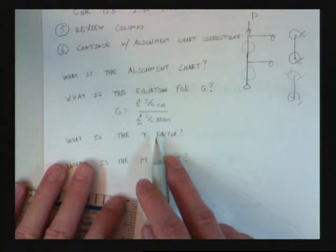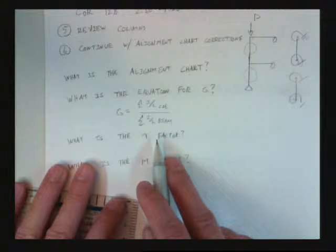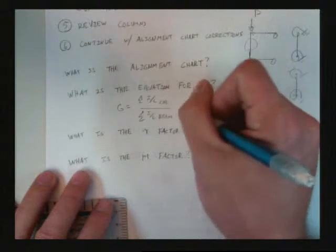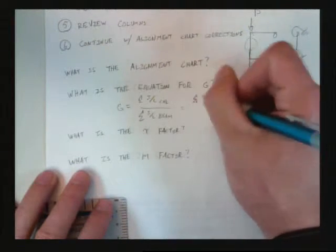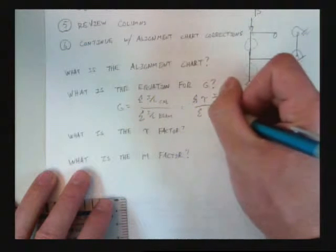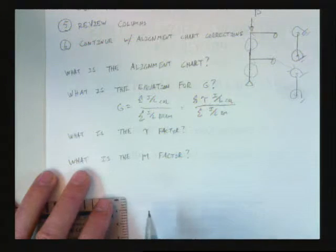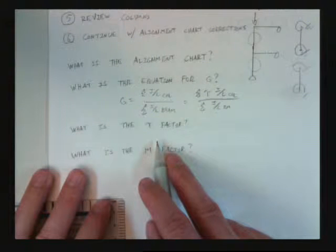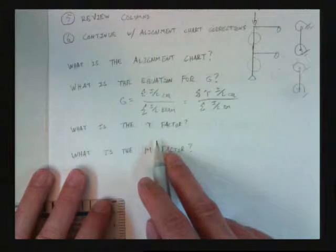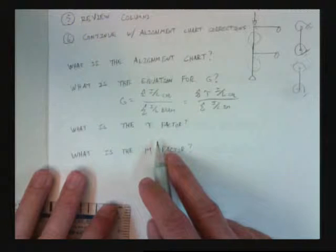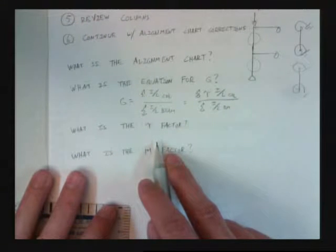We're going to add, what's the first correction factor we added? Tau. The tau factor. Where does it go? The top. So then our equation changed to tau times i over l of the column over i over l of the beam. Right? What's the tau factor? What does it correct? Modulus. That's right. Corrects the modulus. The assumption. One of the assumptions in the alignment chart. That the stiffness of the beam and columns are the same.